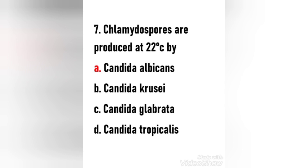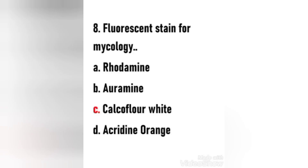Next question: Chlamydospores are produced at 22 degrees Celsius by — Candida albicans, Candida crusei, Candida glabrata, or Candida tropicalis? The right answer is option A, Candida albicans. Chlamydospores are thick-walled spores produced vegetatively from mycelial cells that resist unfavorable conditions and germinate under the onset of favorable conditions. The right answer is Candida albicans.